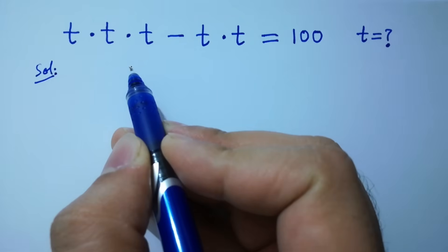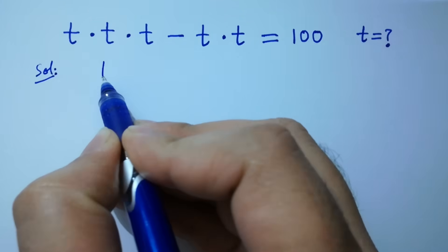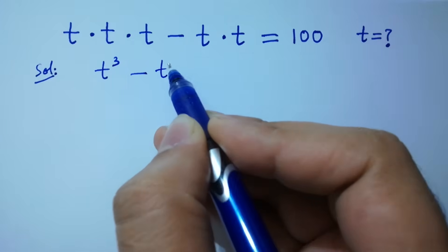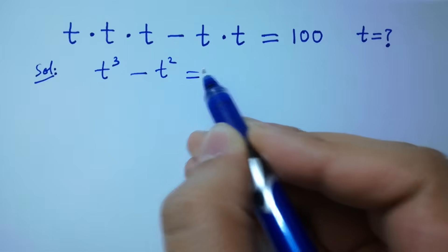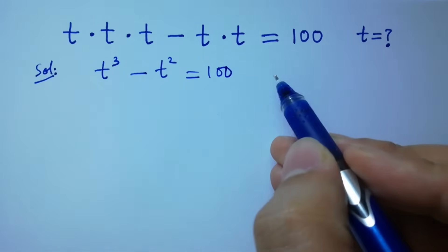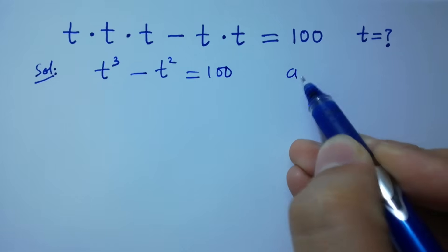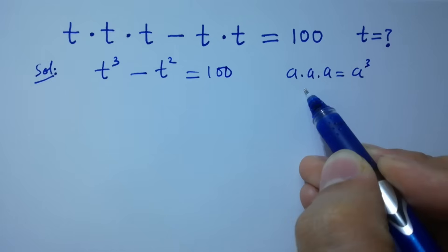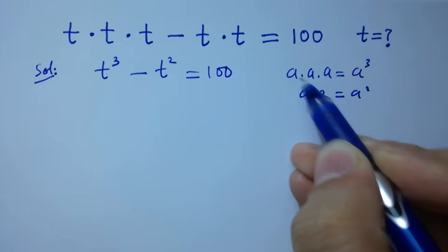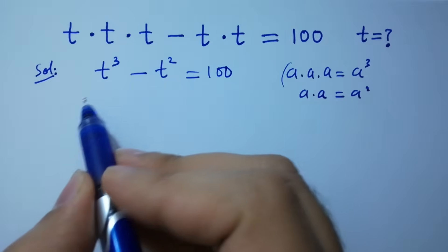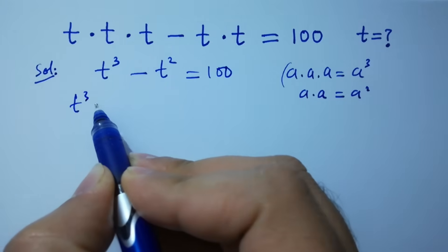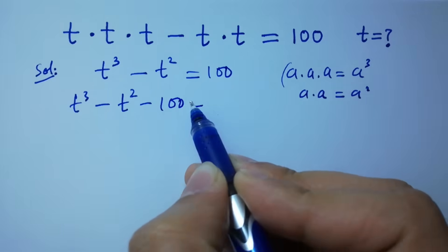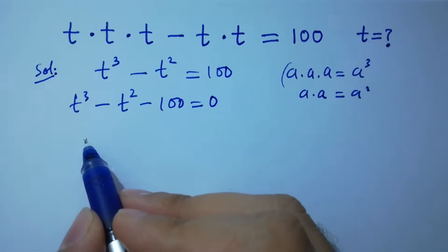This question is the same as t cubed minus t squared equal to 100, since a times a times a equals a cube and a times a equals a square. So we have t cubed minus t squared minus 100 equal to 0.